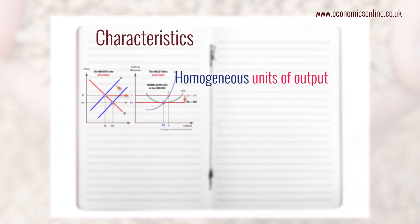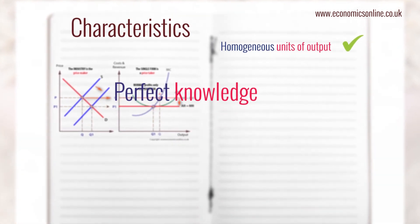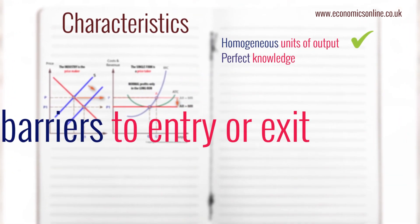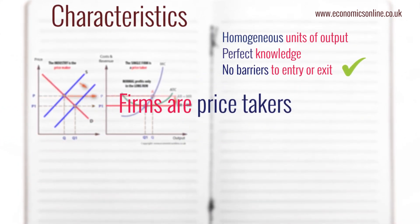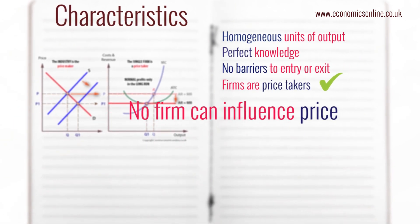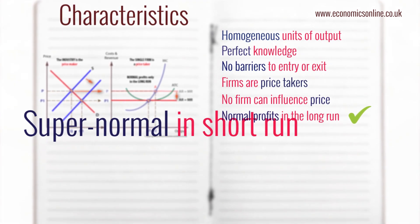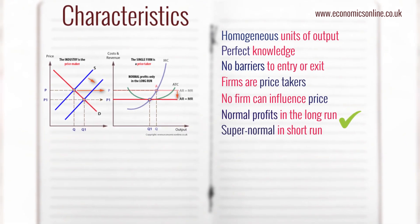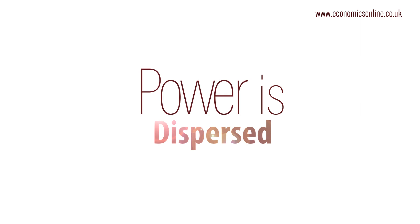Its main characteristics are homogenous units of output, perfect knowledge by all participants including consumers and producers, no barriers to entry or exit, and all firms are price takers — taking their price from the whole market. No single firm can influence the price, unlike in other market forms. Firms are assumed to be profit maximizers, and in the long run firms can only make normal profit, but in the short run they can make supernormal profits.